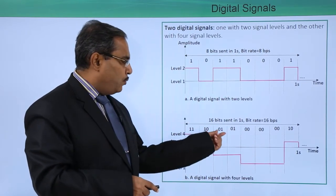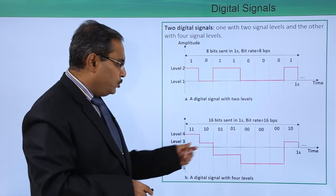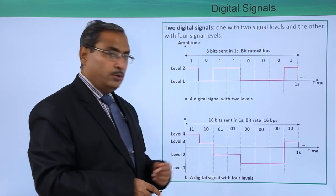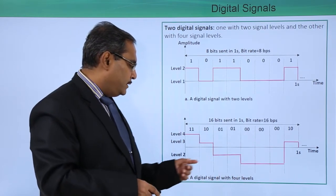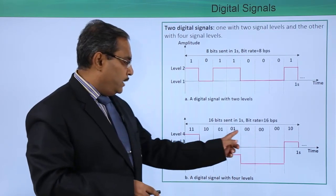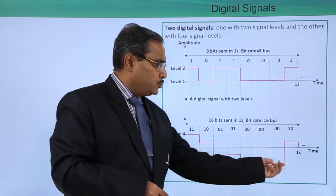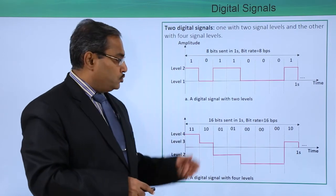We are going for 01. 01 is at level 2. Here we are having 01 at level 2, and whenever we are having 00, that will be at level 1. Here we are having 00 for 3 consecutive time periods, so the level has been maintained.